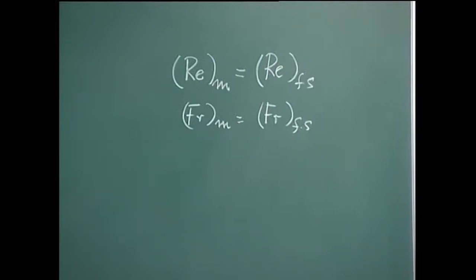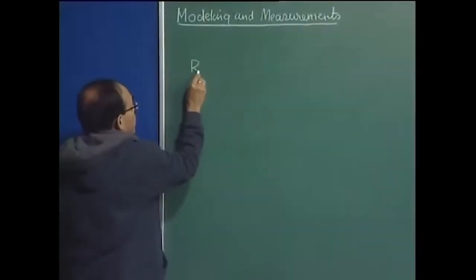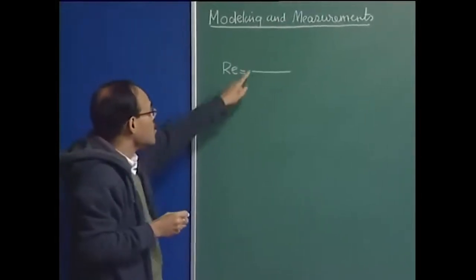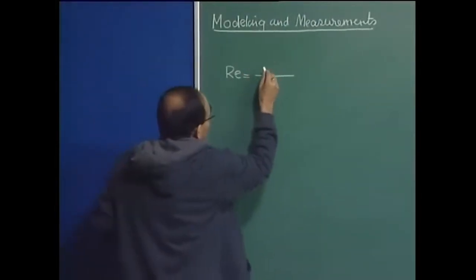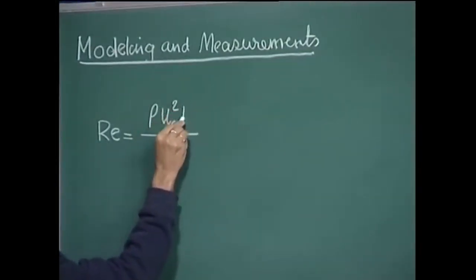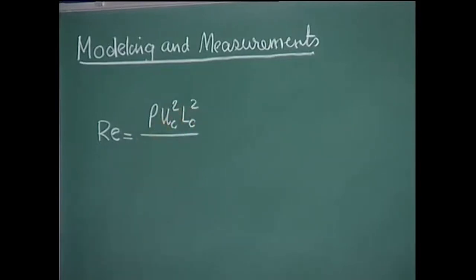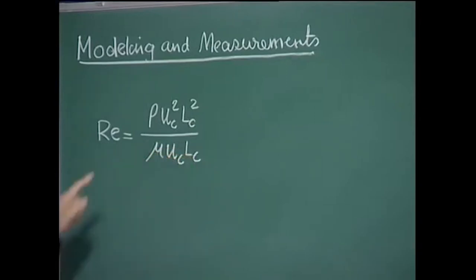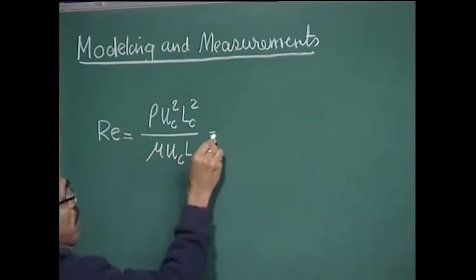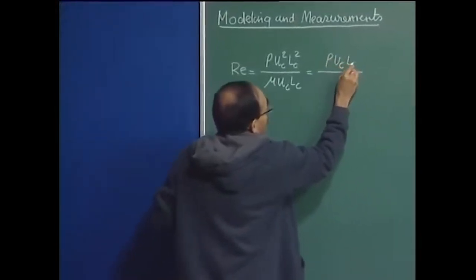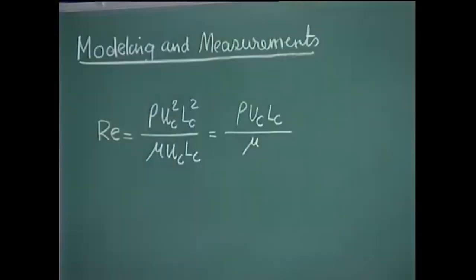Now let us look at the definition of Reynolds number. Reynolds number, as we know, is inertial force divided by viscous force. The inertial force has an expression like ρ·Uc²·Lc² and viscous force has an expression like μ·Uc·Lc. Both have dimensions of Newton. If we simplify this, we get ρ·Uc·Lc / μ, which is the traditional definition of Reynolds number.